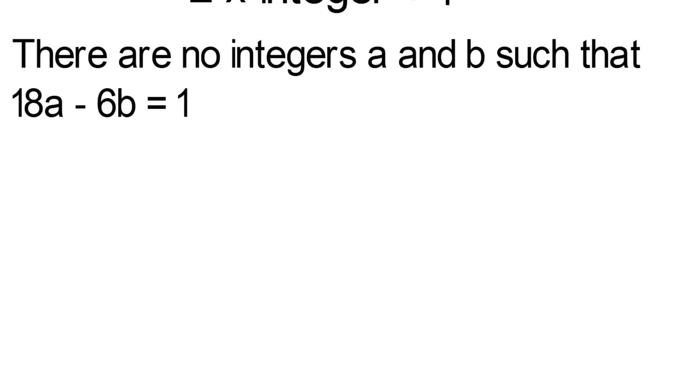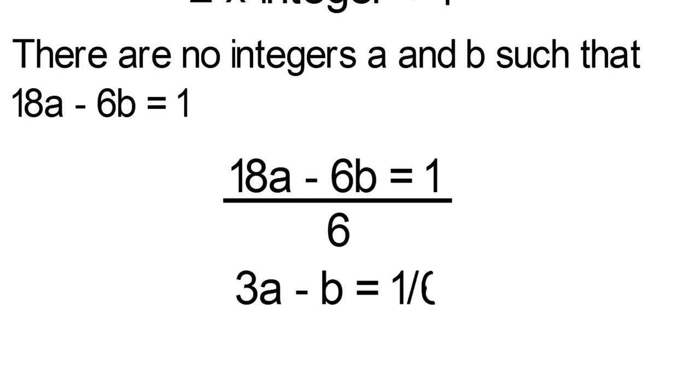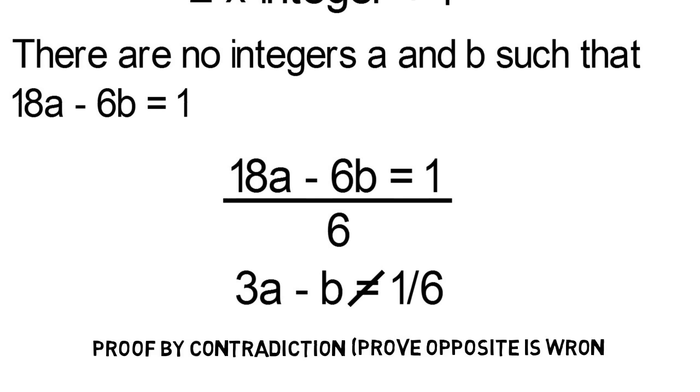Or what if they said, prove there are no integers a and b such that 18a - 6b = 1. To do this, let's first assume that this does work and see what happens. We just divide the whole thing by 6 and you get 3a - b = 1/6. And 3a would yield just an integer, b is an integer as well, and two integers could never subtract to get a fraction. This is a proof by contradiction, where they give you something to prove and you basically try to prove that the opposite is not true or gives you a contradiction.